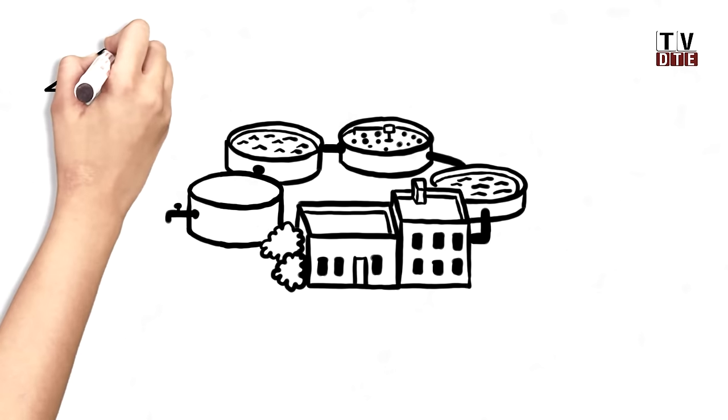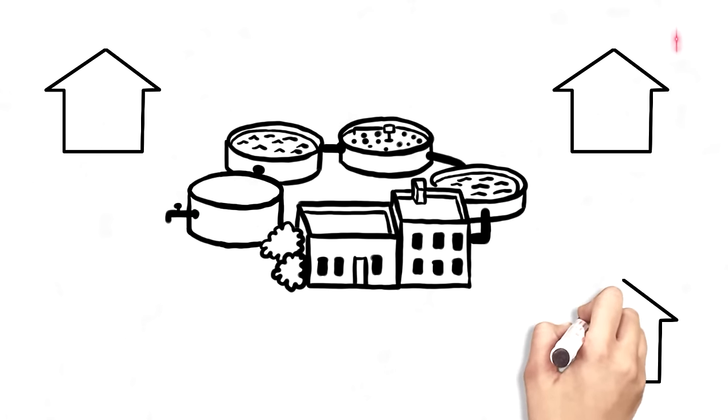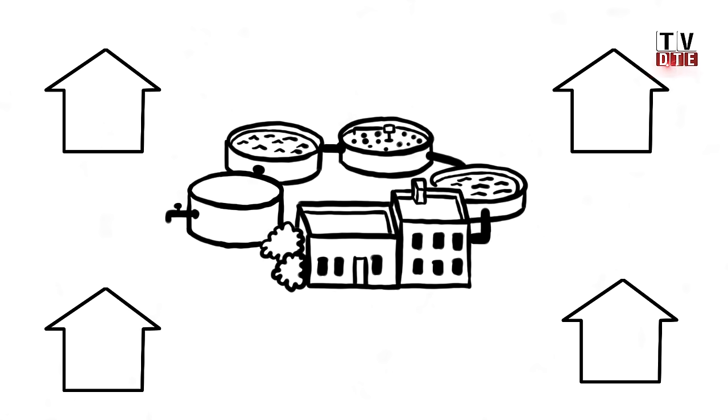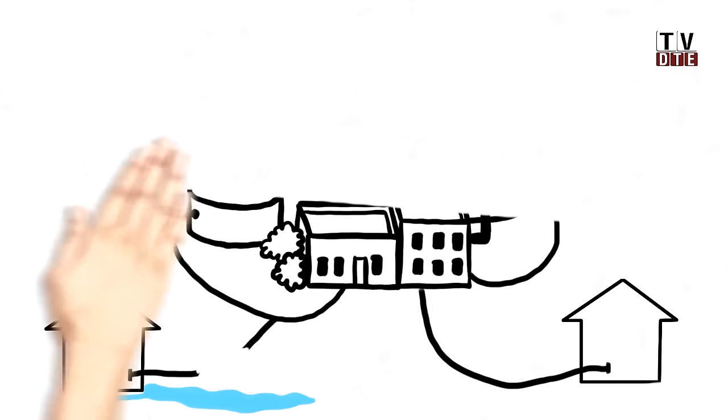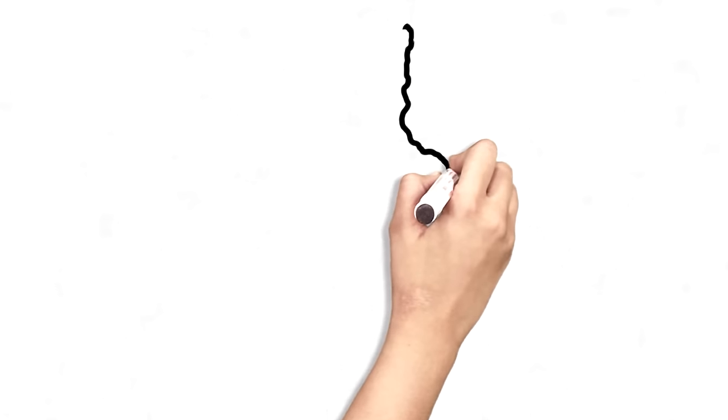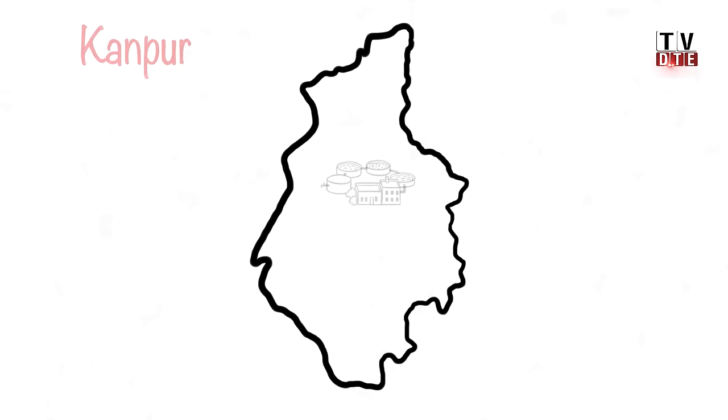Sewage treatment plants would work only if these cities were connected through a well-established sewerage network. But most Indian cities do not have such a system in place, and those on the banks of the Ganga are not very different. So these plants could intercept very little of the sewage generated by the cities before it reached the river. Let's take a look at Kanpur and Varanasi, two big cities on the banks of the Ganga.